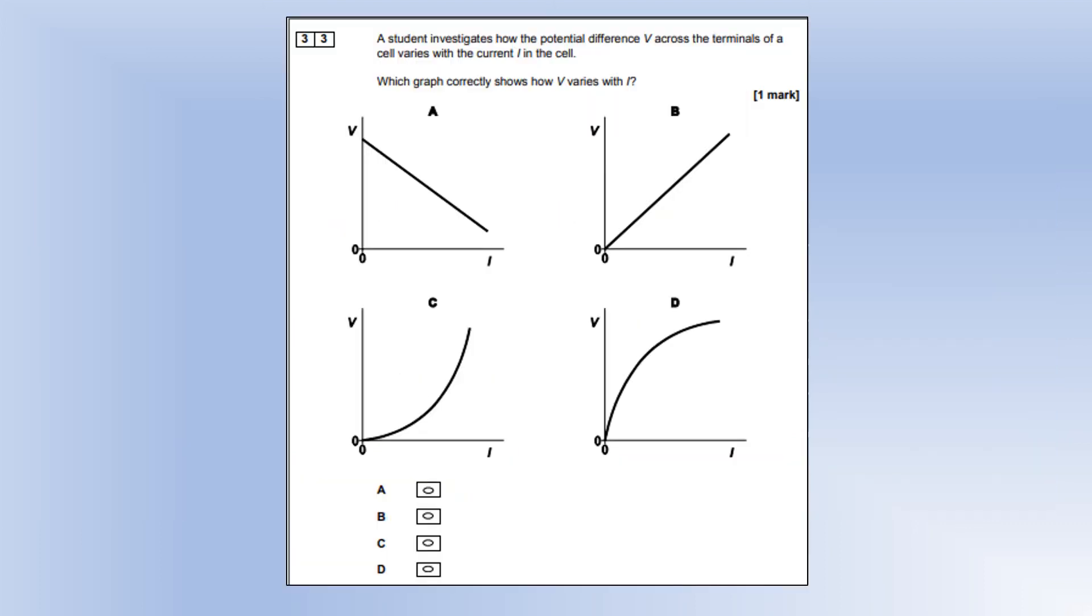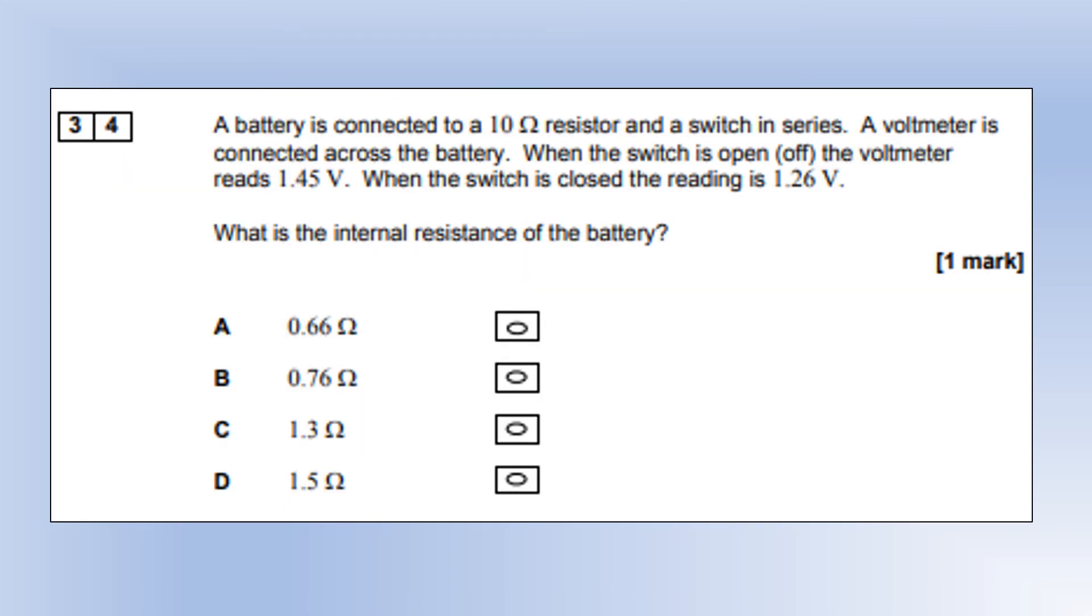A student investigates how the potential difference across the terminals of a cell varies with current. If you've done the experiment, you should recognize straight away that we want A, because the higher the current is, the bigger the potential drop is across the internal resistance.